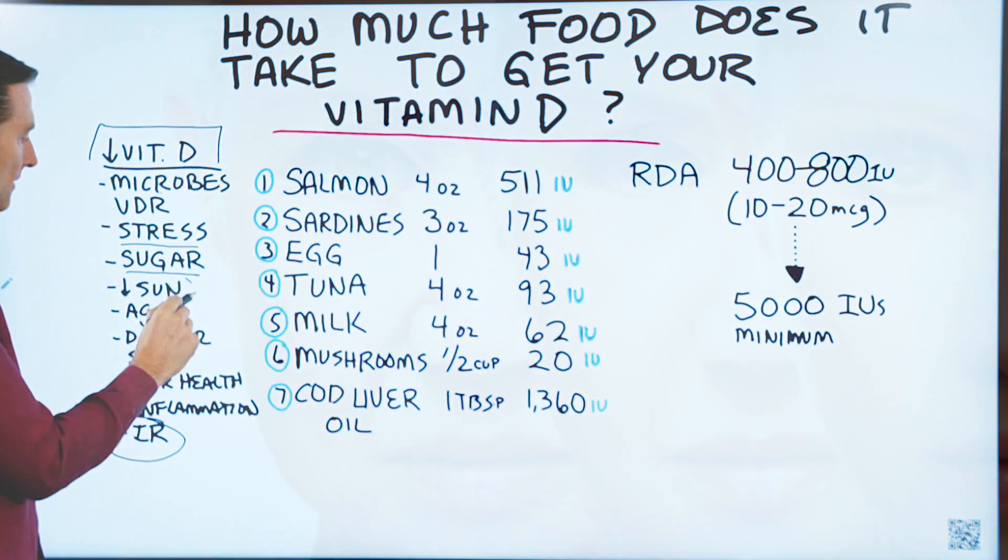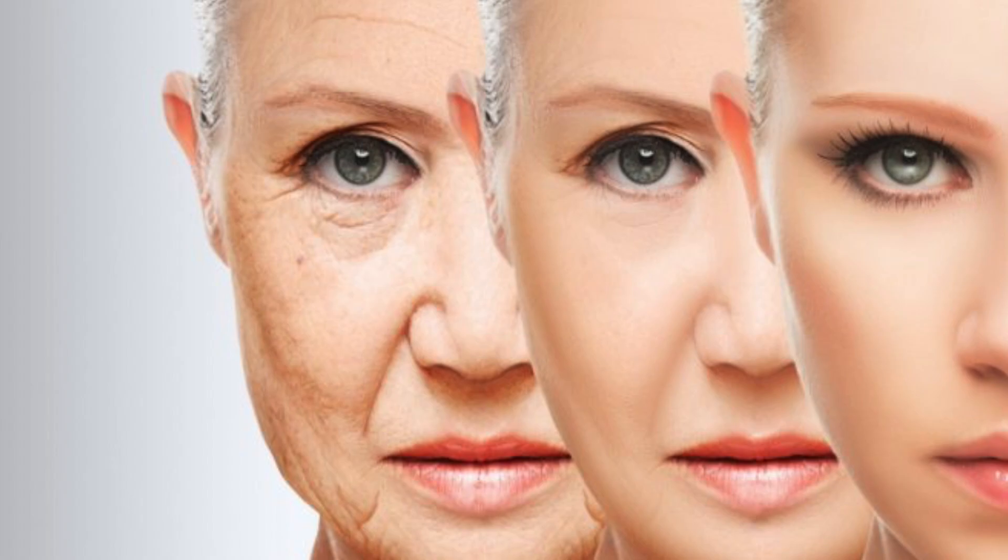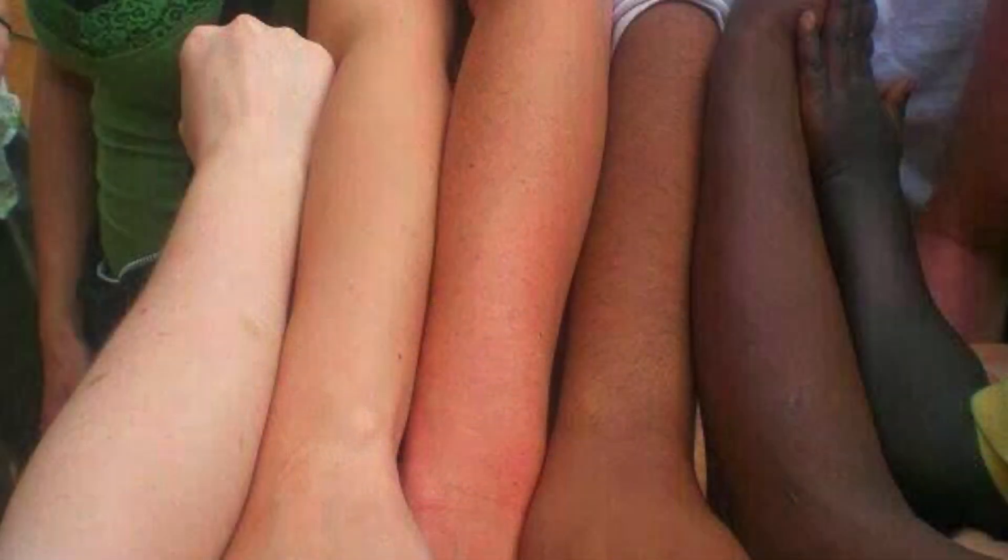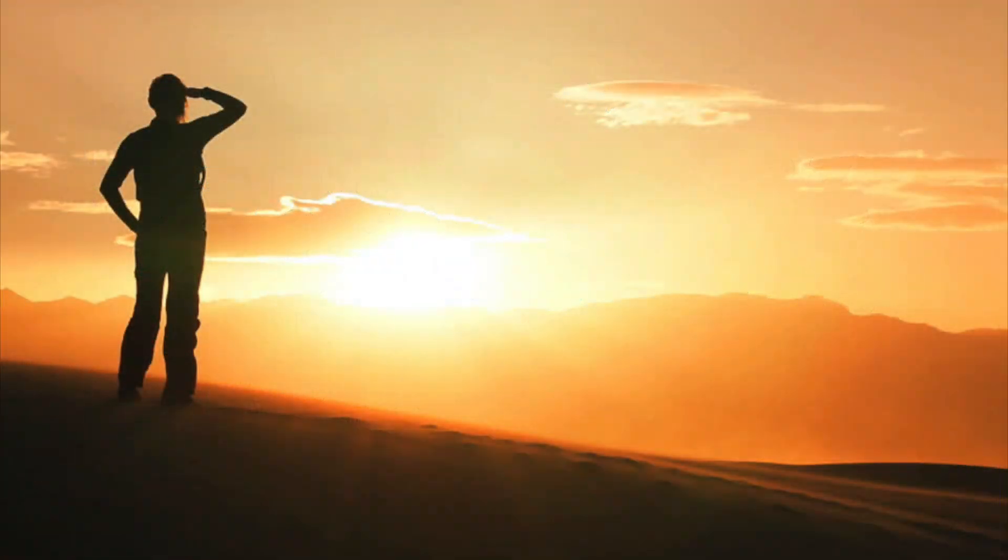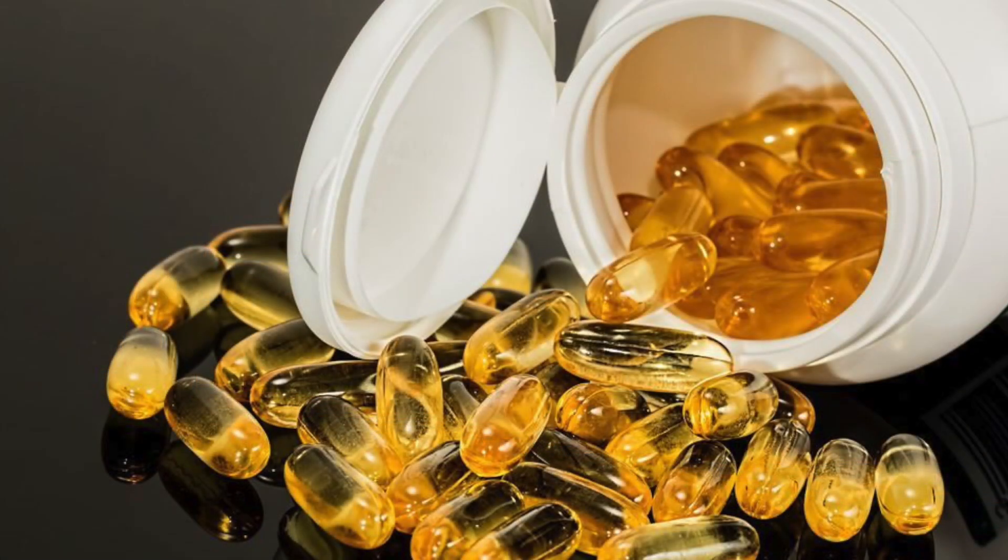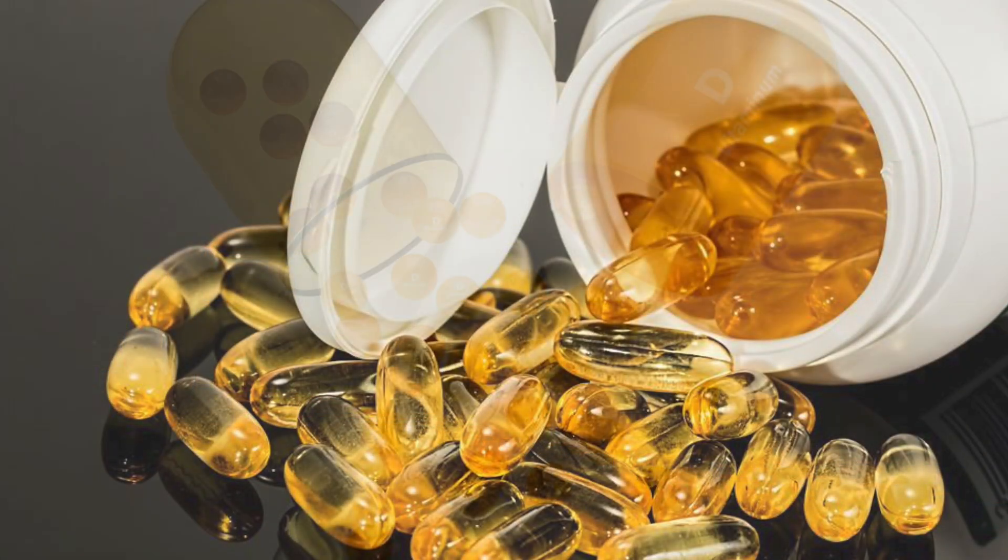Also, not getting enough sun will do it. The older you get, the less vitamin D you can absorb. The darker your skin, the less conversion you're going to have on the skin with vitamin D from the sun. So you need more sun to get a certain level of vitamin D. So as you can see, there's a lot of barriers getting vitamin D that go beyond just the diet.